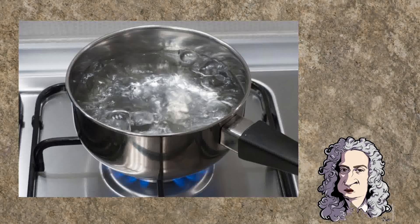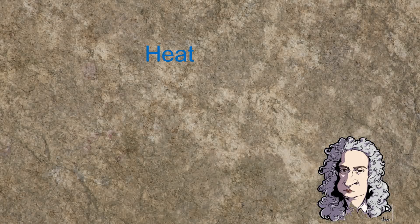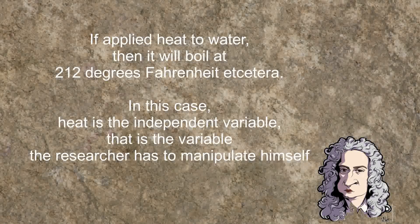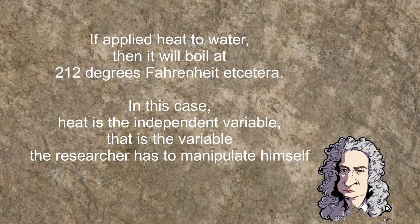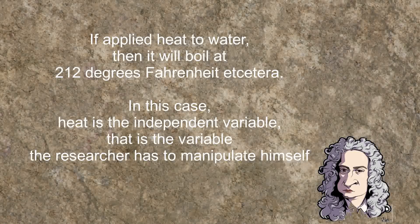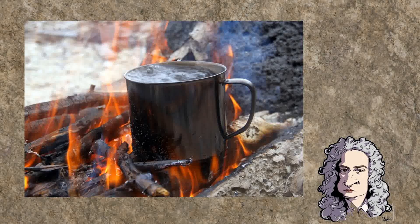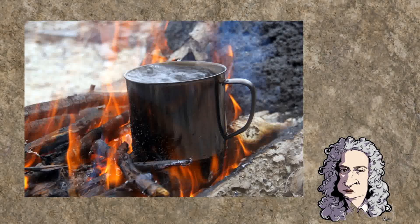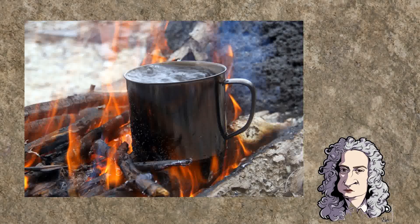Let's begin with heat as the cause. The hypothesis would go somewhat like this: if applied heat to water, then it will boil at 212 degrees Fahrenheit, etc. In this case, heat is the independent variable — that is the variable the researcher has to manipulate himself. However, manipulating heat will not alter the outcome of your dependent variable, the water boiling point. Applying more and more heat to the water will only affect the speed with which the water boils, not the fact that it will boil, at which temperature the water will boil, or at which atmospheric pressure. So heat cannot be the independent variable.